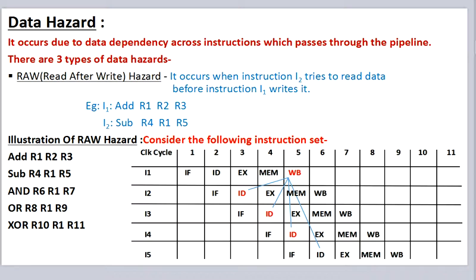Next is data hazard. Data hazards occur due to data dependency across instructions which pass through the pipeline. There are three types of data hazard: read after write hazard, write after write hazard, and write after read hazard.